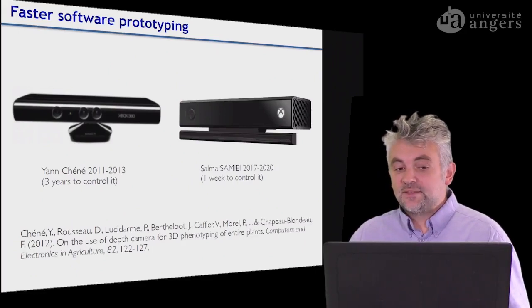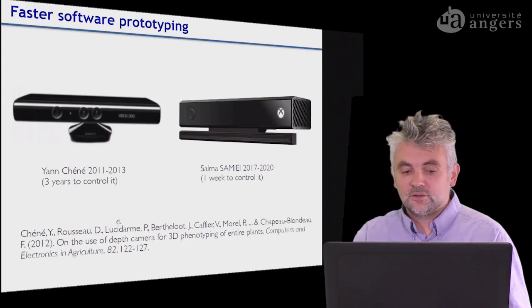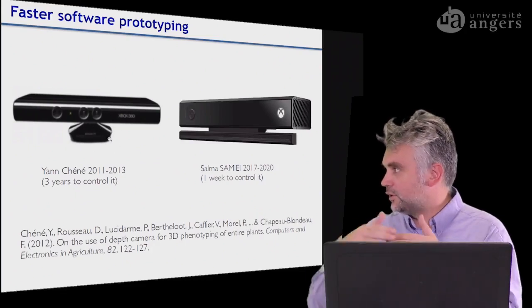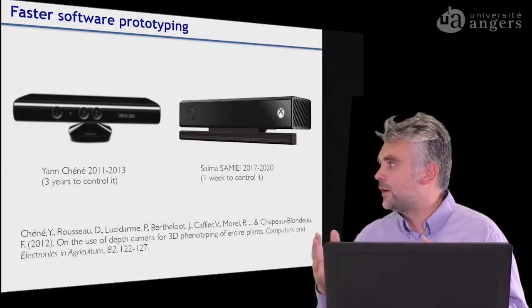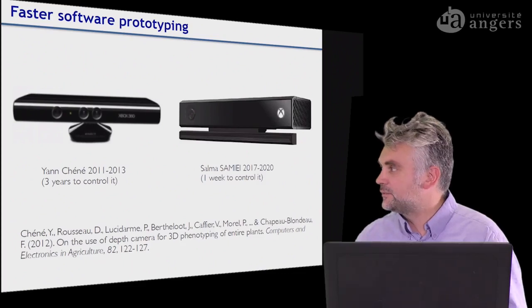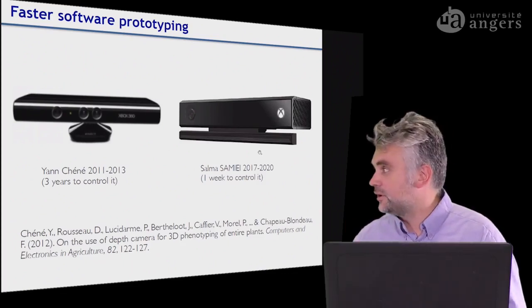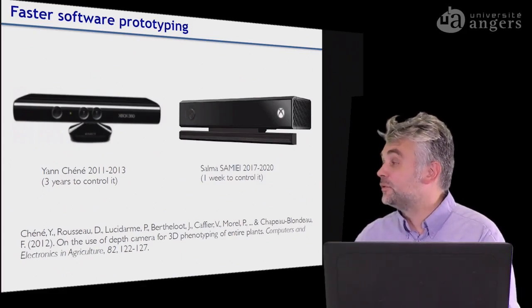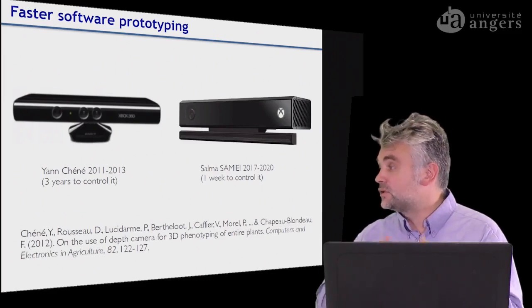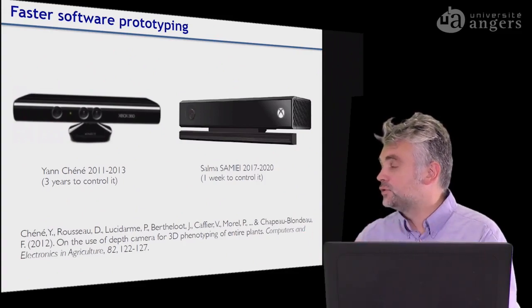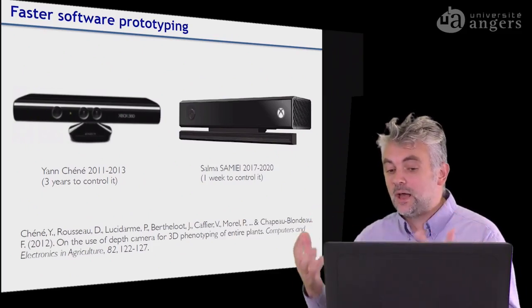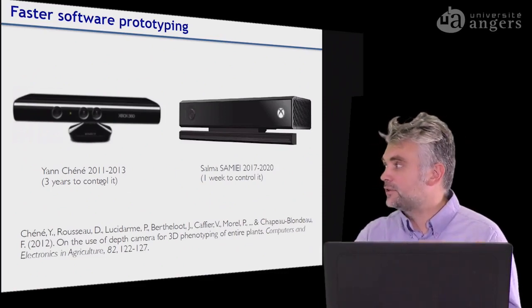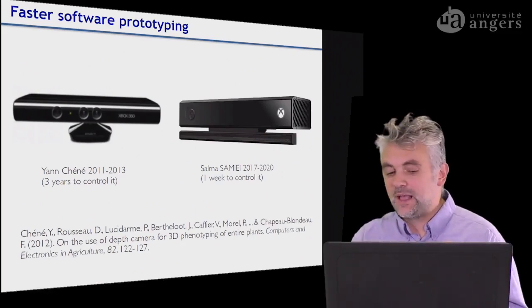We are also now faster for software prototyping. A couple of years ago, when this low-cost LIDAR camera became available, I started working on it with my former PhD student Jan Chenet, and it took him almost three years to develop full skills on these systems. Some six to seven years later, with another PhD student, we selected the second version of this camera, and since all the codes are now available, a student can really master it in one week. In 2017, all the codes are available on the web, whereas six to seven years earlier it was more like hacking systems with little public code.